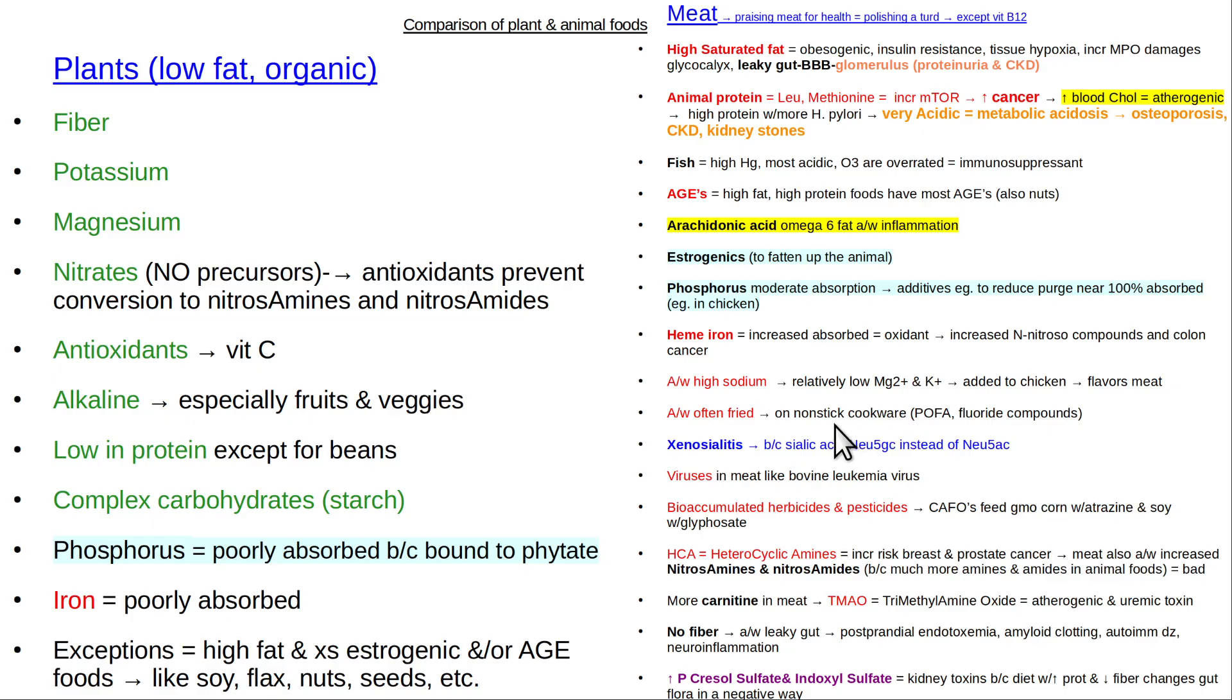Animal foods are often fried. You know, fried hamburgers, fried fish, and that's often fried on nonstick cookware POFAs with, you know, fluorine-related compounds in them that are bad for your health.